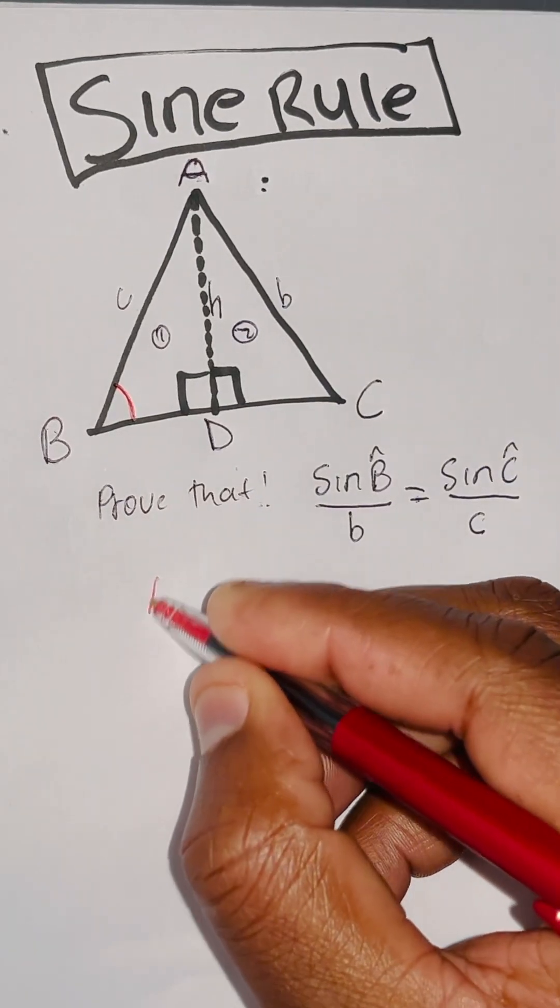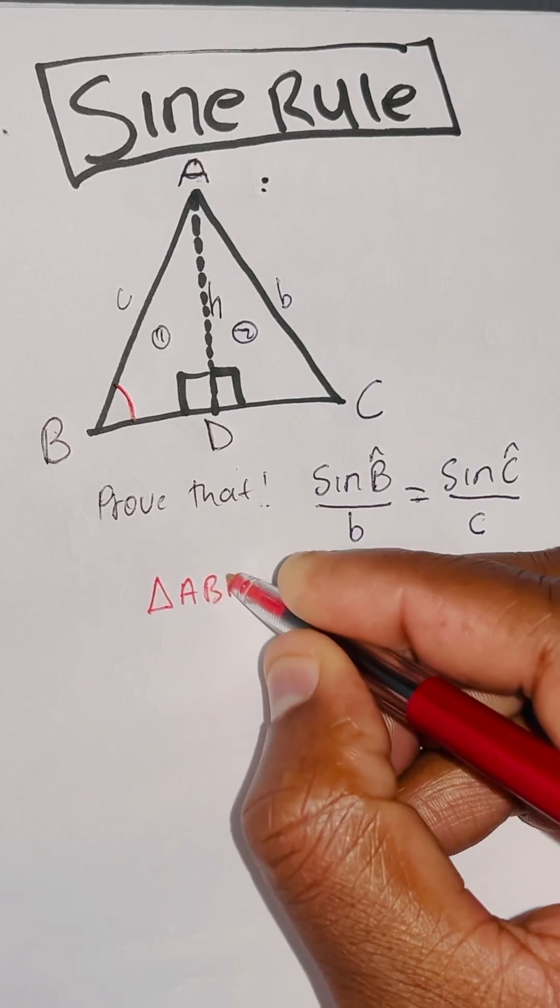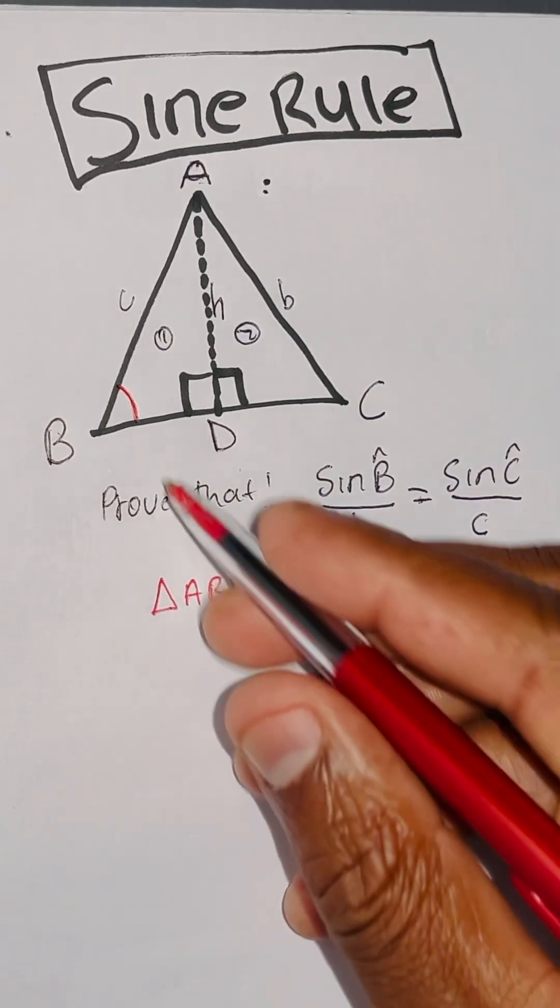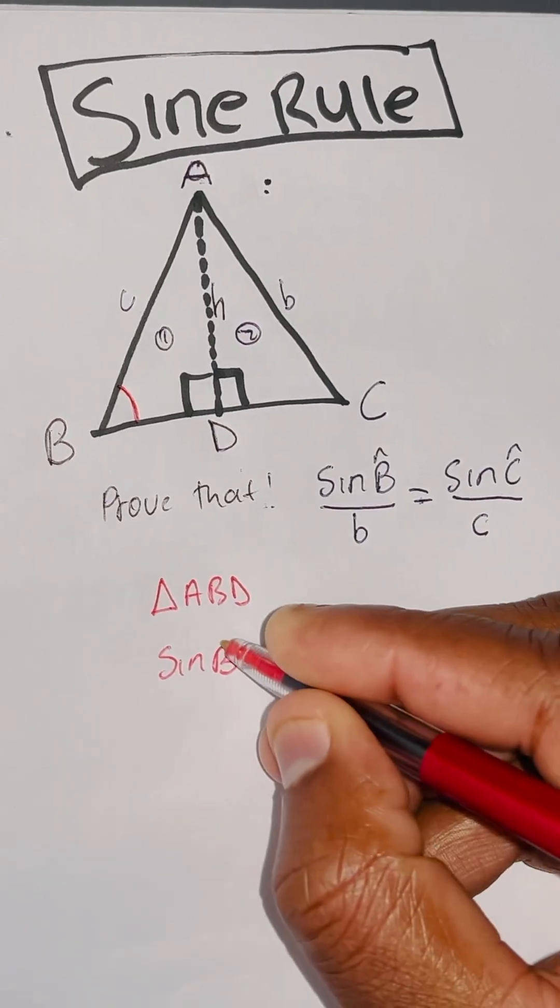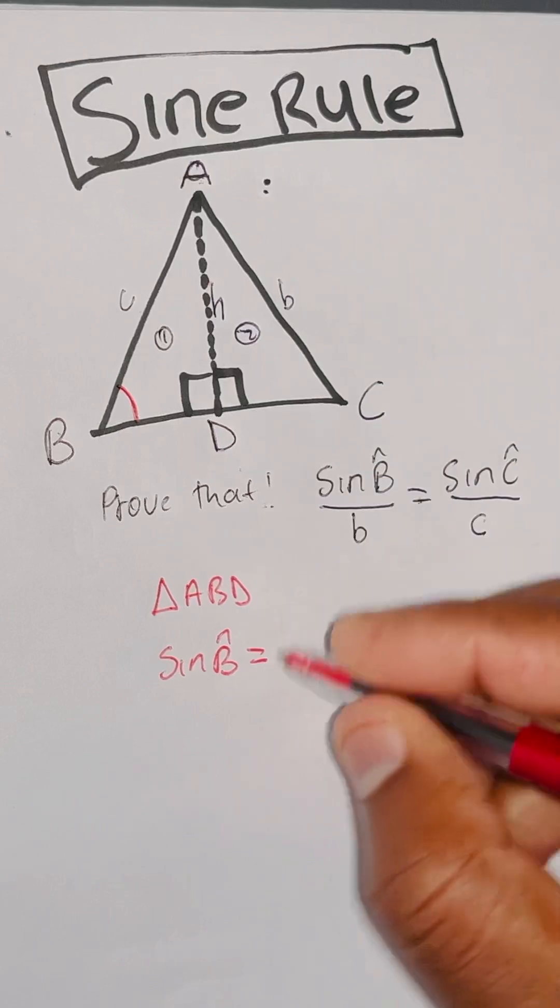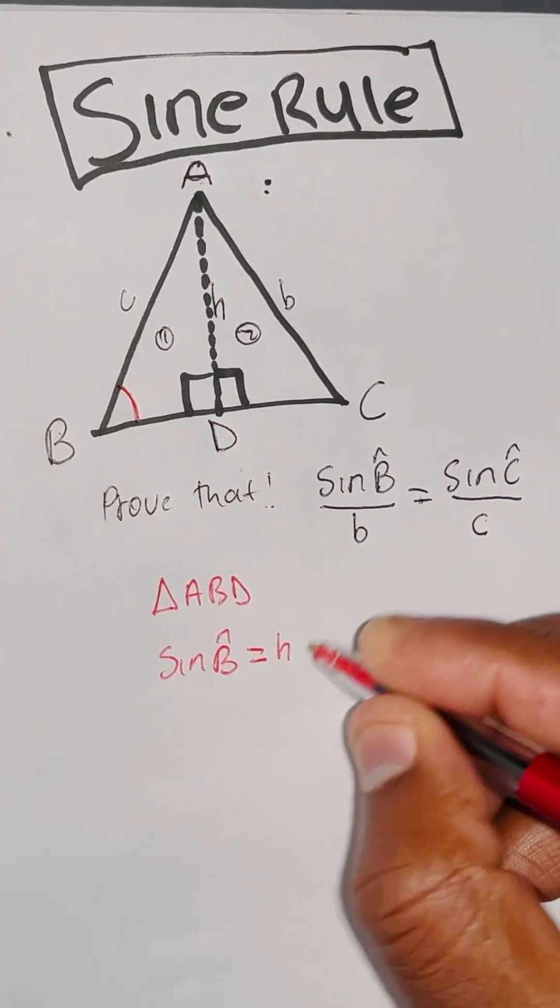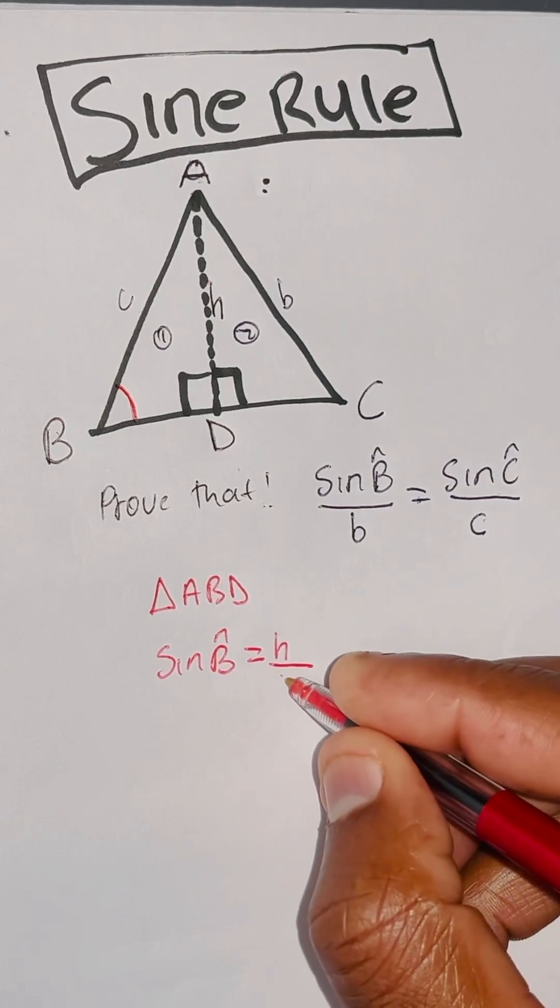In triangle ABD, sine angle B equals perpendicular height divided by the hypotenuse C.